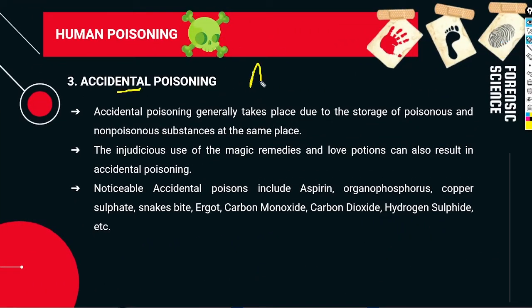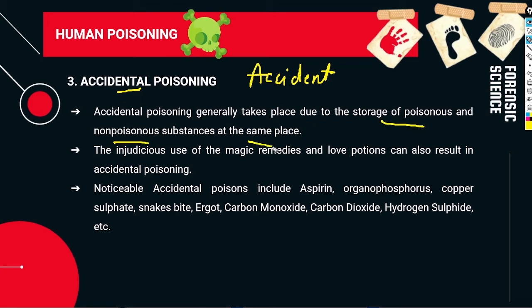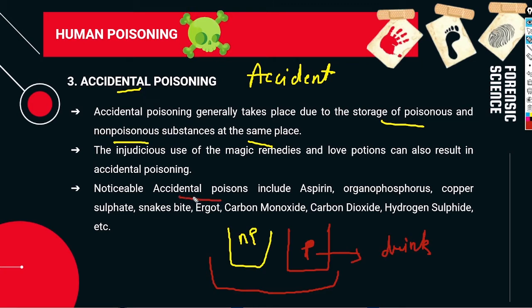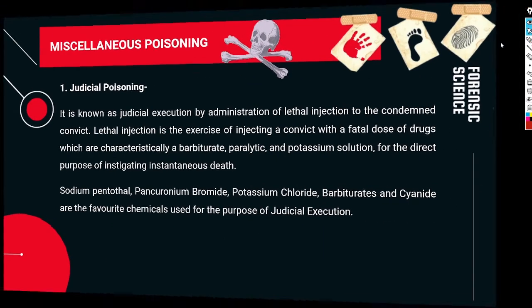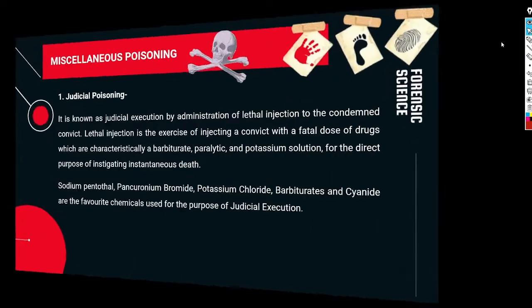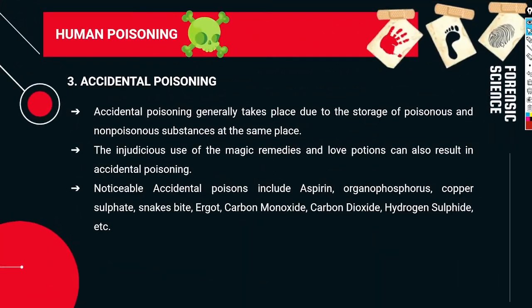Accidental poisoning generally takes place due to the storage of poisonous and non-poisonous substances at the same place, where someone accidentally consumes the poison. Common agents in accidental poisoning include aspirin, organophosphorus compounds, copper sulfate, snake bites, ergot, carbon monoxide, carbon dioxide, and hydrogen sulfide.